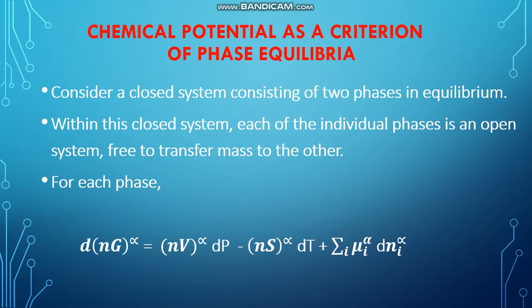Consider a closed system which consists of two phases in equilibrium. Within this closed system, each of the individual phases is an open system free to transfer mass from one phase to the other phase.